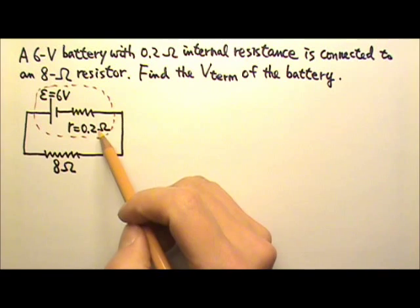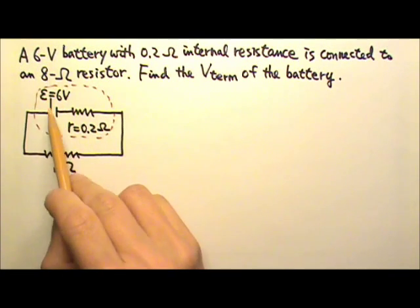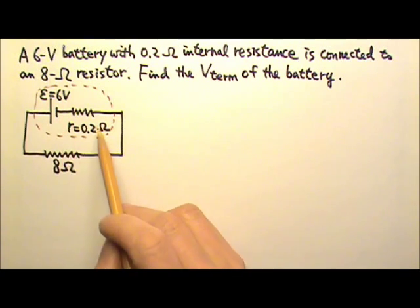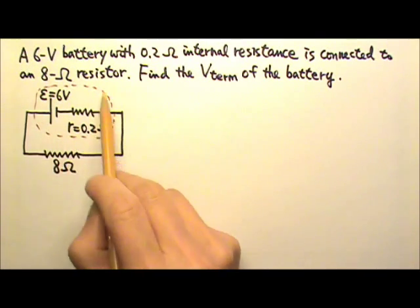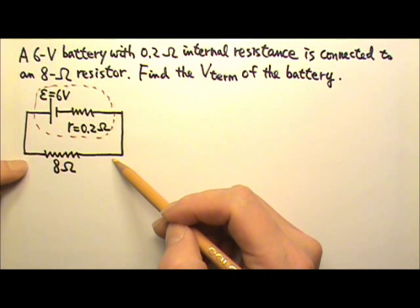So this is the real battery. It has a 6V EMF ideal battery plus a 0.2 ohm internal resistance. And this entire battery is connected to an 8 ohm resistor.